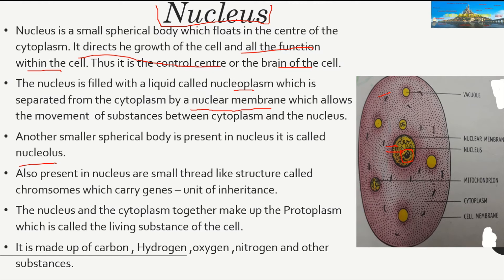In addition to this, there are chromosomes — small structures that carry genes. Genes contain crucial information required for the cell to function and to produce cells of a new kind. Genes are the unit of inheritance — meaning the transfer of specific characteristics from parents to offspring. The nucleus and cytoplasm together form the protoplasm, which is considered the living substance of the cell, made of carbon, hydrogen, oxygen, nitrogen, and other substances.